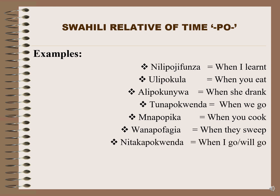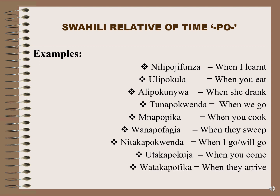Number seven: 'nitakapokwenda' — when I go, or when I will go. Number eight: 'utakapokuja' — when you come. Number nine: 'watakapofika' — when they arrive. Number ten: 'watakapolipa' — when they pay. In each example, we can see the relative of time po used with the pronouns and verb stems, translated as 'when' in English.